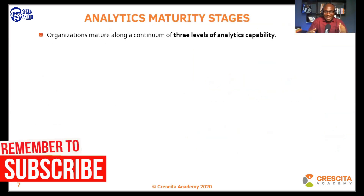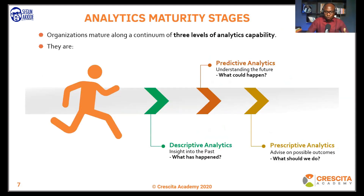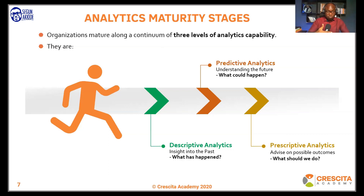If we talk about types of analytics, there are three major levels of analytics capability that organizations tend to go through. The first is descriptive analytics, which provides insight into the past — what has happened. For example, checking my phone's battery level gives a current reading of 88%, and the settings can tell me how long that power will last — that's a simple example of descriptive analytics.